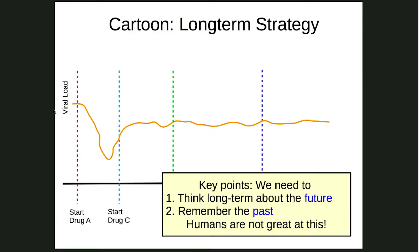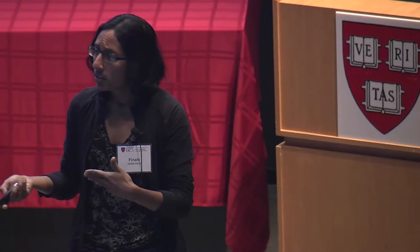The key points are that we need to think about the future — which drugs you give now cause resistance mutations that might make future drugs not work. But we also need to think about the past. Two points on a trajectory can look identical in terms of viral load, yet have completely different histories of drugs already tried. Humans aren't great at remembering the past or reasoning about many future events — this is where the digital doctor and reinforcement learning come in.